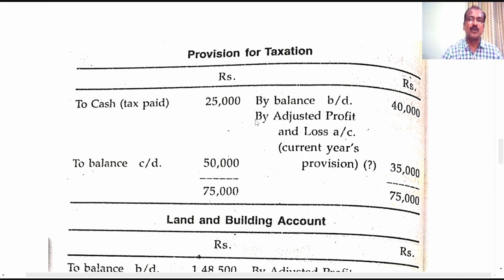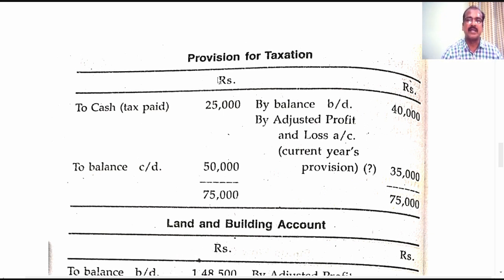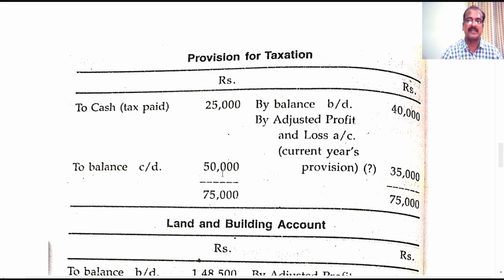Now let's look at the provision for taxation ledger account. The opening balance is written in the credit side. They have stated that tax paid amounted to 25,000 rupees for the current year — the journal entry for paying tax is: provision for taxation account debit to cash. Out of the 40,000 rupees opening balance, if 25,000 rupees was utilized for payment of tax, the balance expected is 15,000 rupees. But the actual closing balance is 50,000 rupees, therefore there is an increase of 35,000 rupees, which is nothing but the current year provision for taxation. The journal entry for this hidden information is: adjusted P&L account debit to provision for taxation, 35,000 rupees.